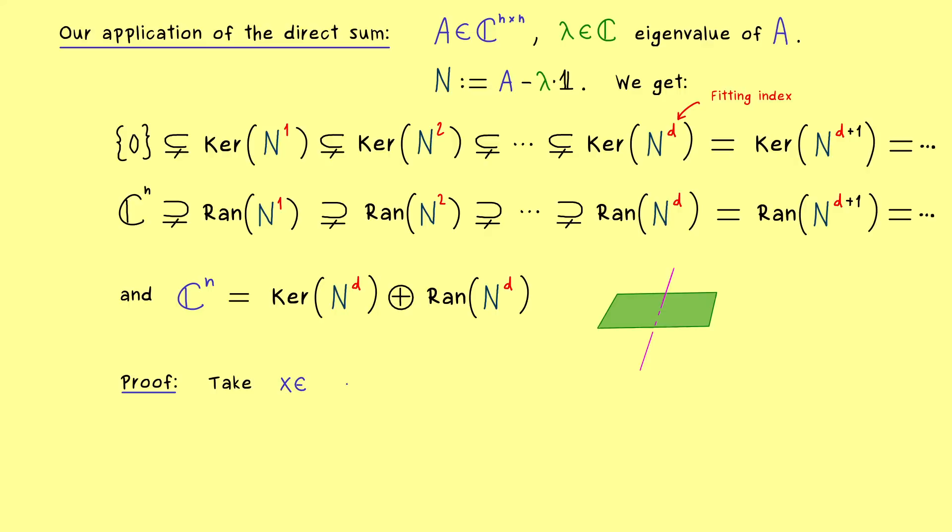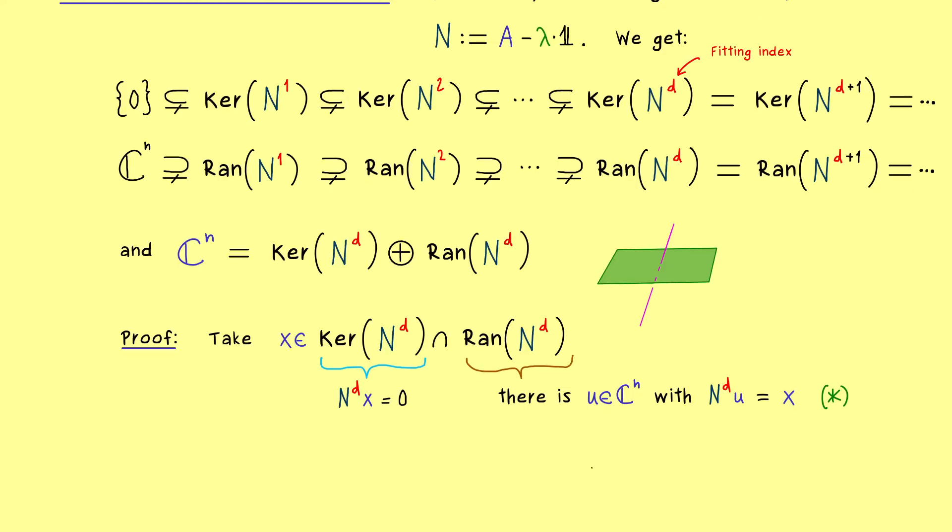So you definitely remember, that the direct sum is only allowed to write, if the intersection of both subspaces is only equal to the zero vector. So more precisely, if we take a vector x from this intersection, we should be able to show that this is equal to the zero vector. And now the nice thing is, that this intersection immediately gives us two equations we can work with. And on the other hand, being in the range means, that we find another vector in cn, which is mapped to x. So we could write, there is a u in cn, such that n to the power d applied to u is equal to x. And now the good thing is, that this totally fits to the first equation, because we can put that x into the first equation. So let's call this one star, and let's use it on the left hand side. Hence we have n to the power d applied to n to the power d u. Therefore we can simplify that to n to the power 2d applied to u. So the conclusion is, that our u here lies actually in the kernel of n to the power 2d.